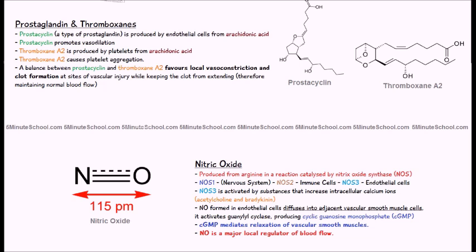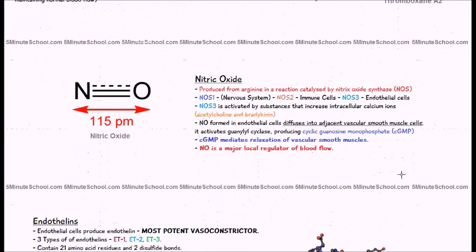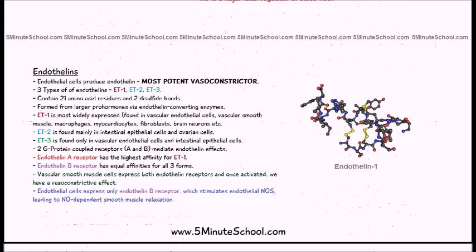Nitric oxide is a major local regulator of blood flow. In one experiment, forms of arginine that inhibited nitric oxide synthase were infused into the blood, and blood pressure actually increased — suggesting that nitric oxide synthase is a chronic regulator of blood pressure. In summary, this is how nitric oxide affects blood flow.